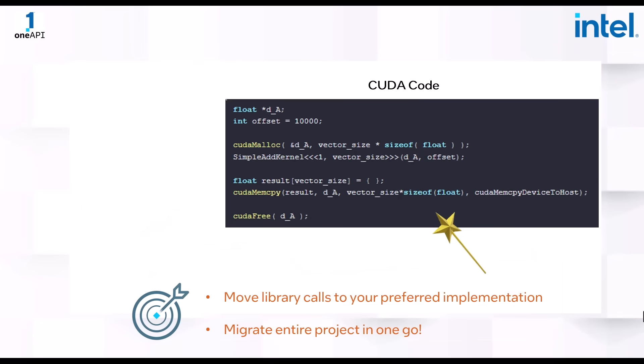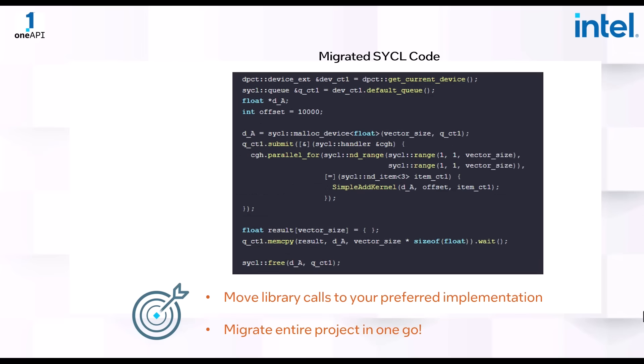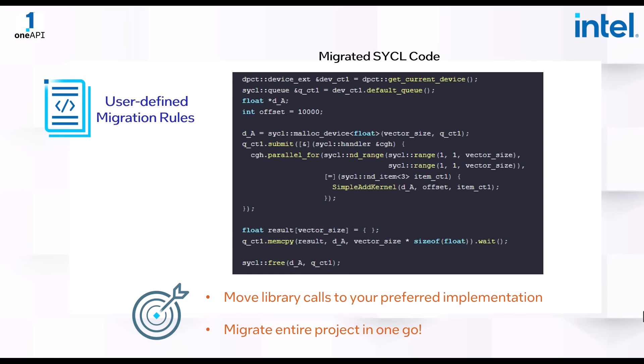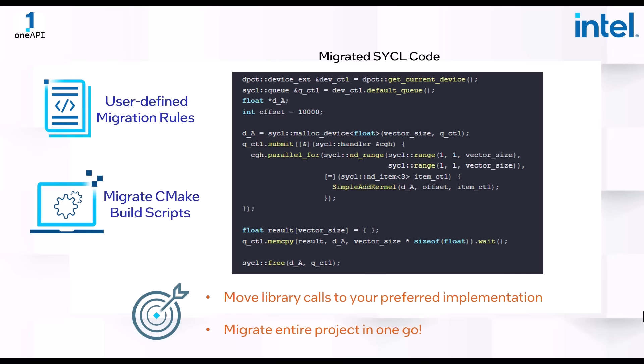Do you prefer to use custom function APIs in addition to the OneAPI libraries? The Compatibility Tool allows you to define your own migration rules so that the migrated SYCL code has desired performance and integrates with existing code bases, adhering to your project's standards. It also enables porting entire CMake and Make projects.